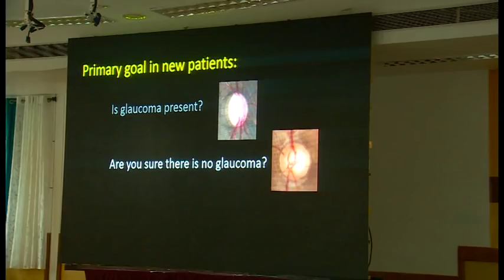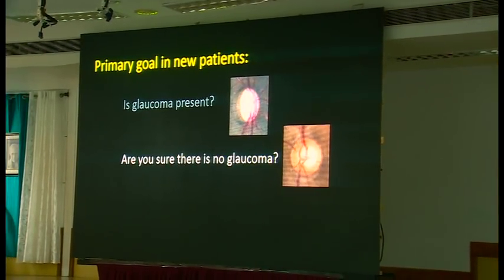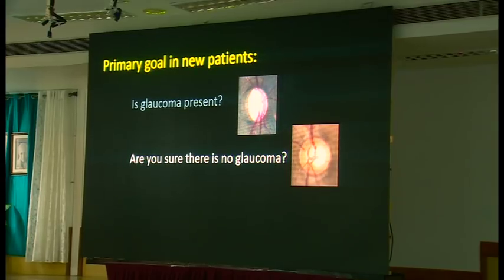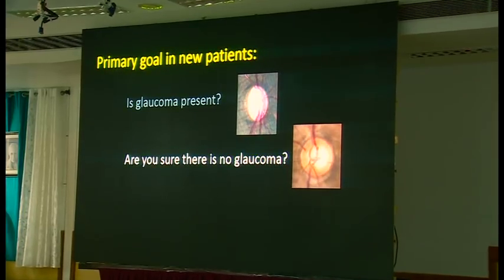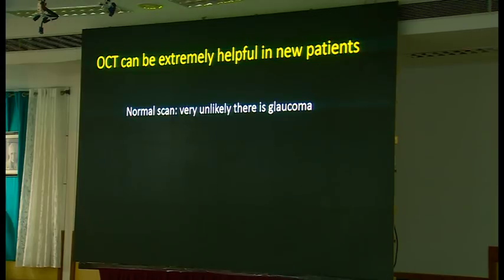I'll talk today about OCT for structure and progression analysis. OCT has different goals in new patients versus return patients. It's generally most useful in new patients where it can tell us whether glaucoma is present, and more importantly, whether we can be sure there's no glaucoma. We often talk about the additional false positives that OCT creates, but if the test is used correctly it can allow us to discharge somebody who doesn't need to be followed for glaucoma, and to some extent it can tell us how severe the disease is.